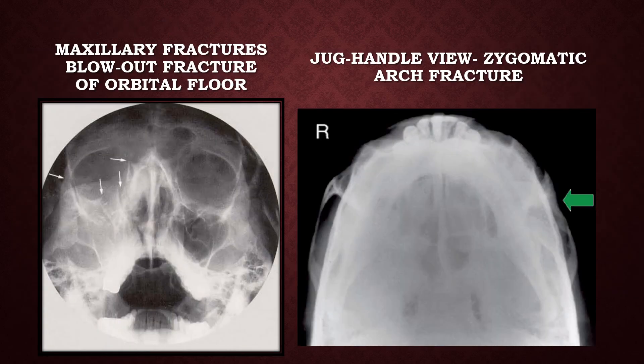Maxillary fractures — this is an example of a blowout fracture of the orbital floor, where you can see multiple areas of fracture at the floor. This is a jug handle view, also called the submentovertex view, showing a zygomatic arch fracture compared to the normal right side. The left side shows the fracture.